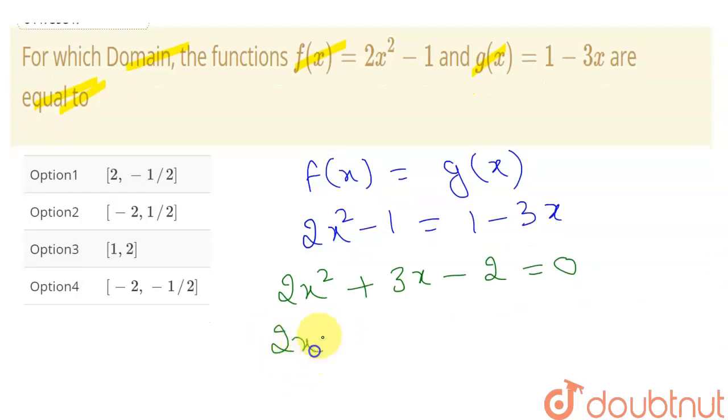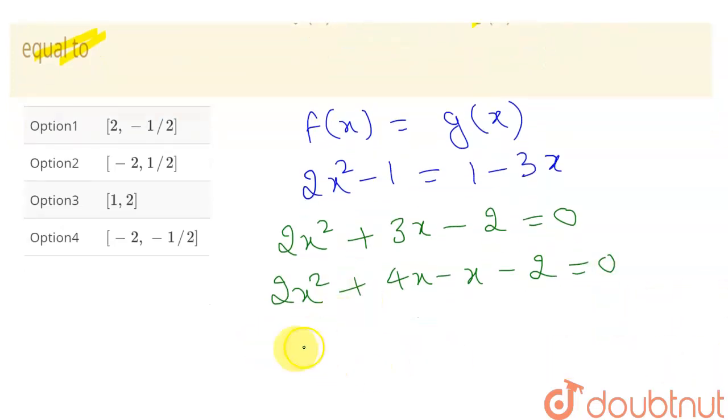So I have to factorize. I can write 3x as 4x minus x and minus 2 equal to 0. So now I can take 2x common. Taking 2x common, this will give me x and this will give me 2. Now in these two terms I can take minus 1 common, so this will again give me x plus 2 equal to 0.